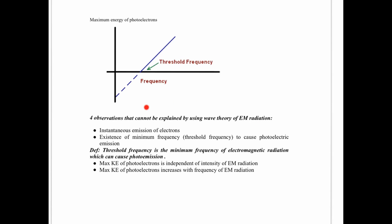These are the four observations showing that EM radiation does not behave as waves. Number one: instantaneous emission of electrons. Number two: the existence of threshold frequency. Number three: maximum KE is independent of the intensity of EM radiation. Number four: maximum KE only increases with frequency of EM radiation. This was one of the phenomena that challenged scientists' idea of EM radiation — they had always thought EM radiation were waves, but the photoelectric effect shows otherwise.